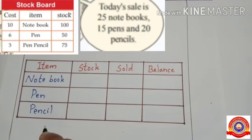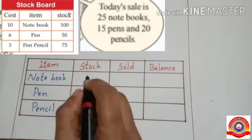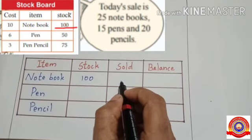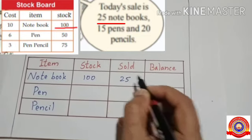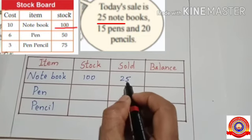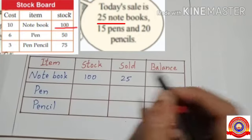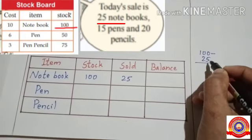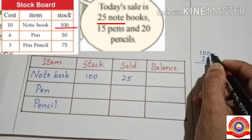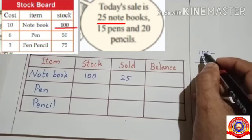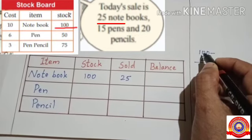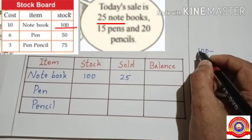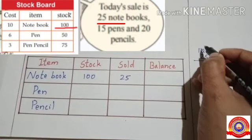What is the total number of notebooks? Yes, 100. How many notebooks were sold today? Yes, 25. So to find the balance notebooks, subtract 25 from 100. It is not possible to subtract 5 from 0, so we have to borrow from the tenth place. In the tenth place there is also 0, so we have to borrow 1 from the hundred place and 0 becomes 10.